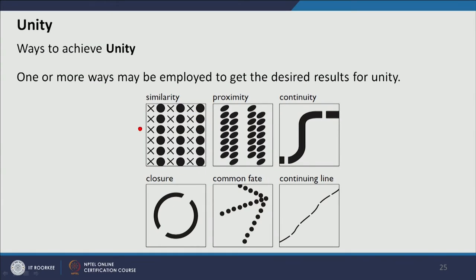To summarize, the ways to achieve unity are: similarity — circles are united and crosses are united; proximity — clustering shapes together creates two different zones in a composition; continuity of line — the line breaks but continues and connects; closure — two elements are meaningful when together, as in IBM's logo; and common fate — when together they create meaning through shared direction.